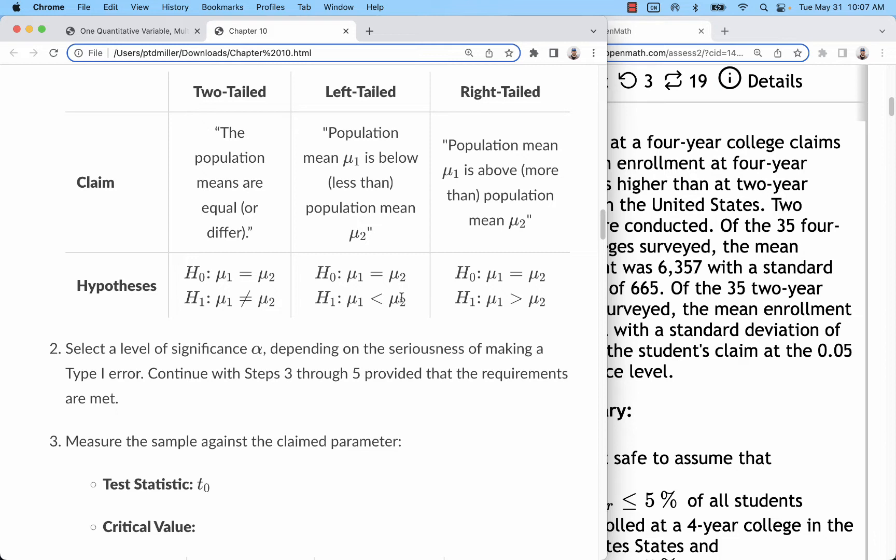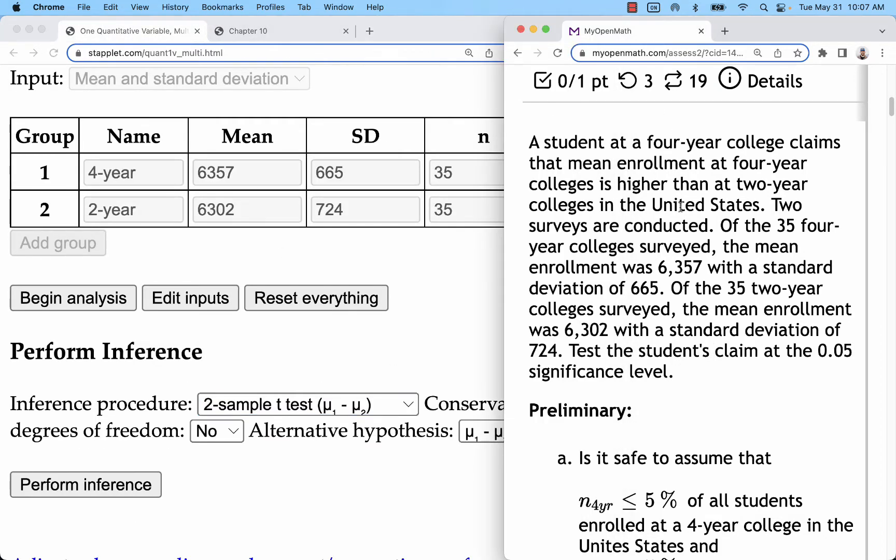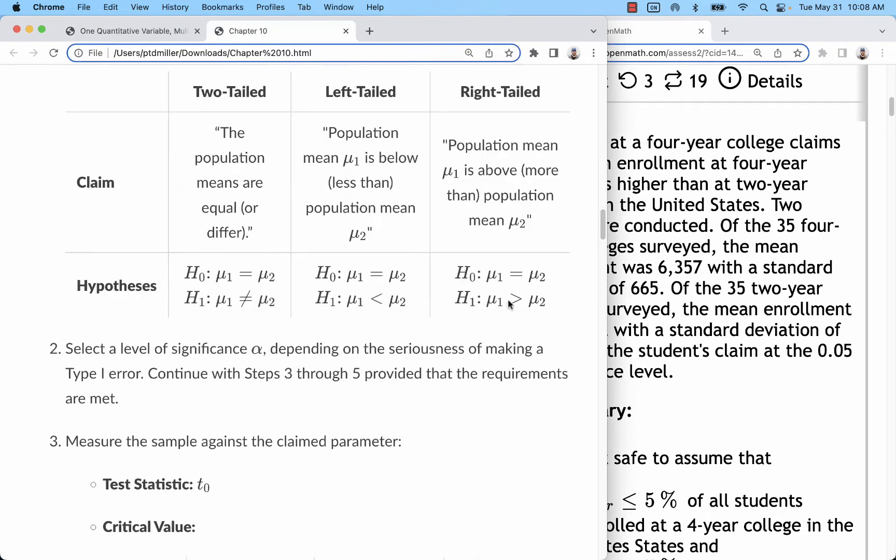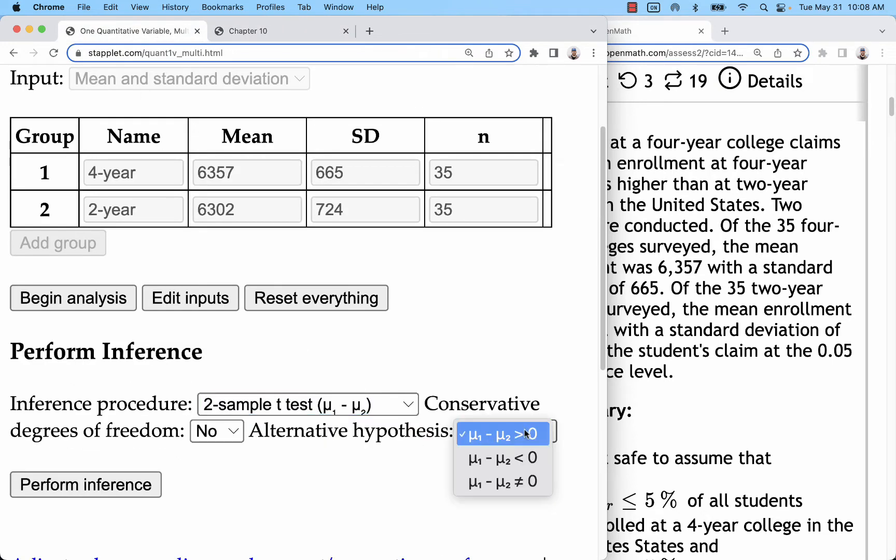Well, imagine just doing a quick algebraic step where you subtract that mu2 from each side of the equation. So this one would be mu1 minus mu2 is less than zero. This one would be greater than zero. This one would be not equal zero. So less than zero, greater than zero. For the left tail test, it's less than zero. In this situation, the student says that enrollment at four-year colleges is higher than two-year colleges. So in other words, the first population mean is above the second population mean. That will be mu1 greater than mu2. If we subtract that over, we get greater than zero.